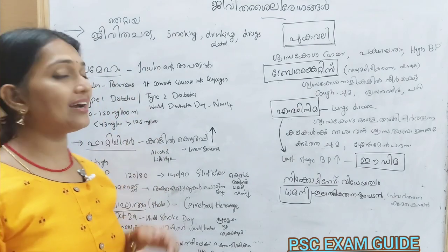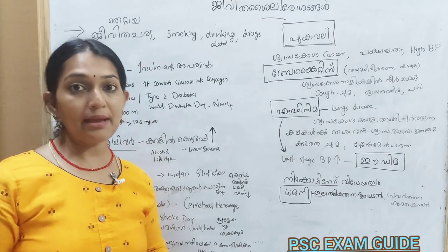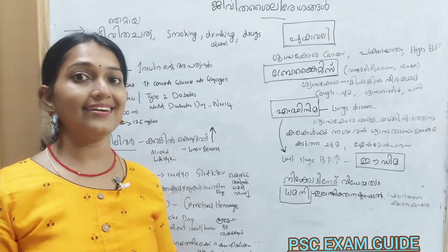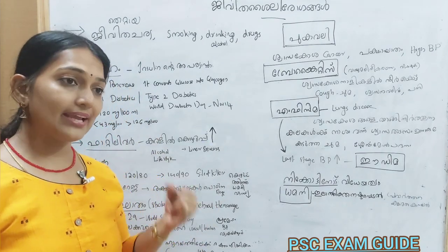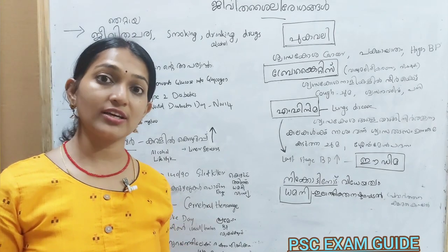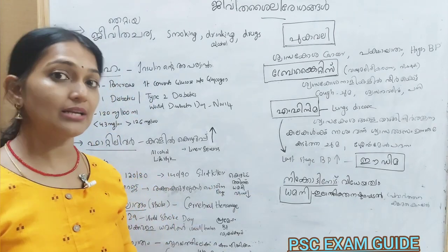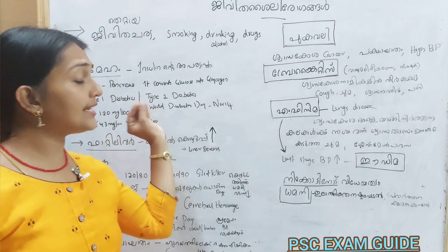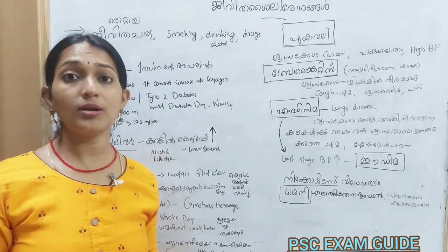Number 1: Prameha — Diabetica is one of the names. Prameha, blood pressure, cholesterol, etc. Insulin plays a key role in the body in relation to this disease.